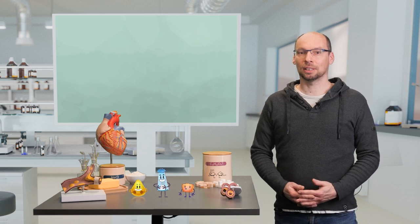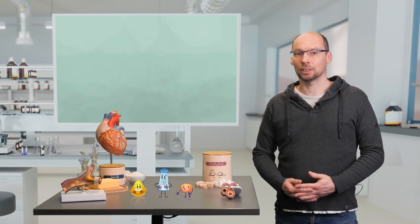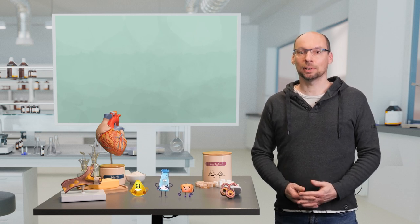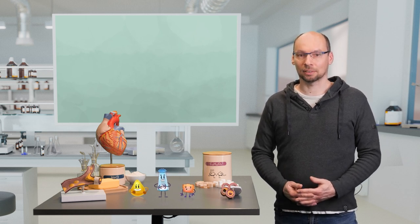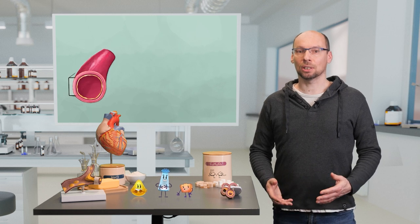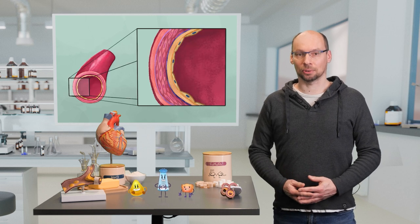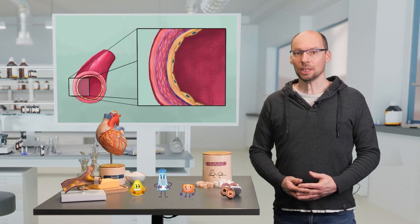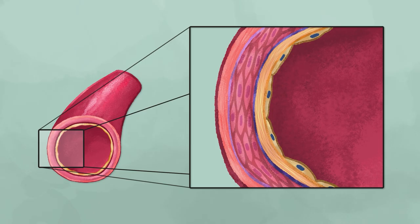To better understand what is going on in arteries during the build-up of these plaques, we have to talk about the anatomy of a healthy artery. In general, all arteries consist of three layers.